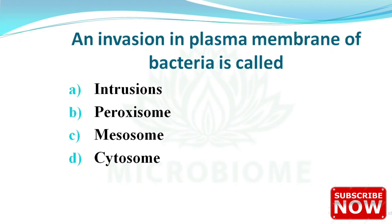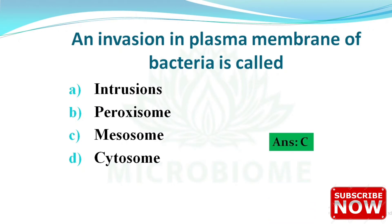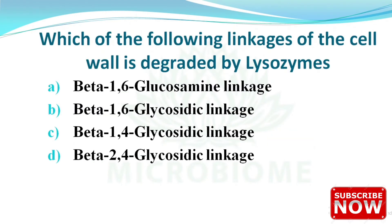Next: an inversion in the plasma membrane of bacteria is called what? The options are intrusions, peroxisome, mesosome, and cytosome. The correct answer is option C — mesosome. Mesosome helps in synthesis of the cell membrane, replication of DNA, and protein synthesis.